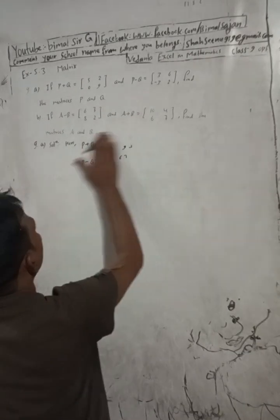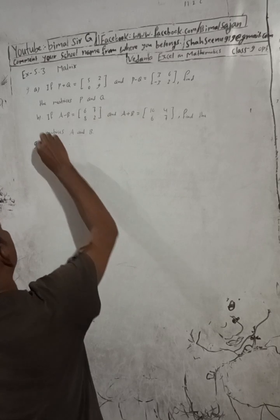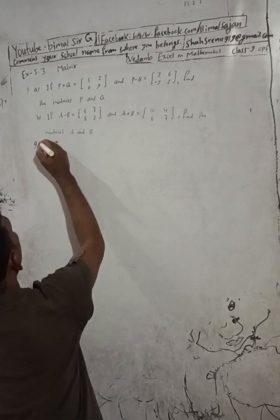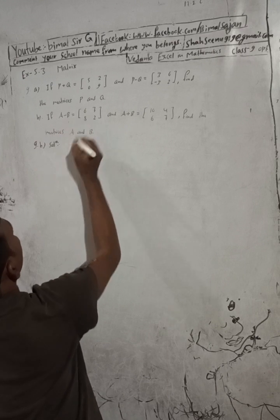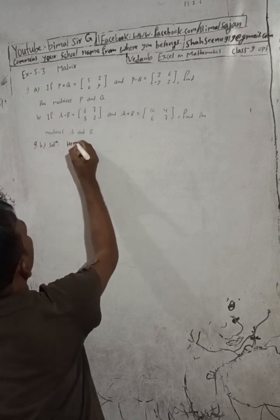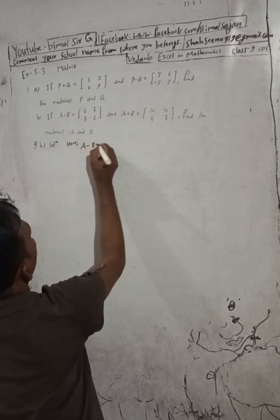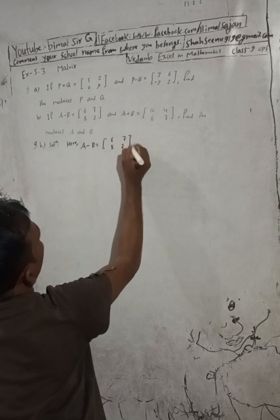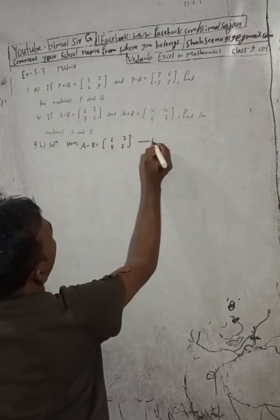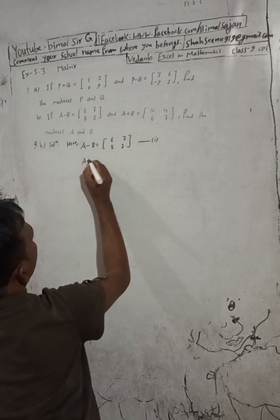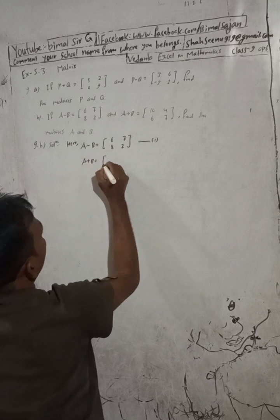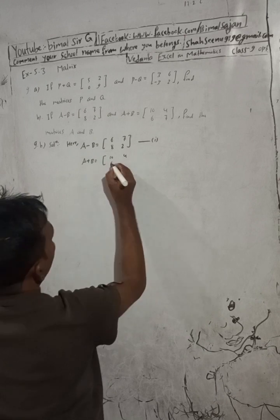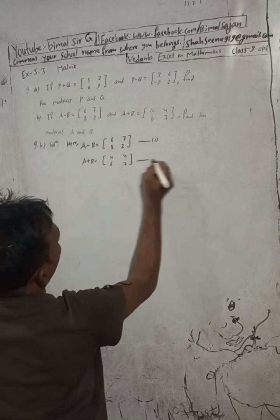This is part B, question 9b. For part B solution: if A minus B equals [6, 7; 8, 2] — equation 1 — and A plus B equals [10, 4; 6, 7; 8] — equation 2.